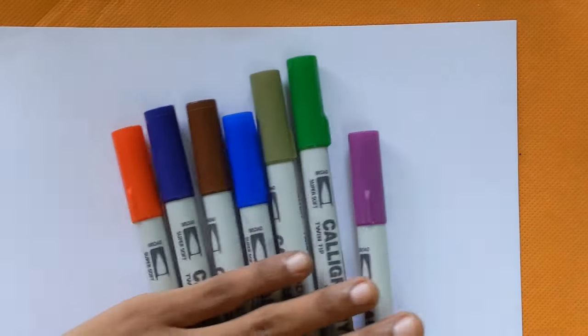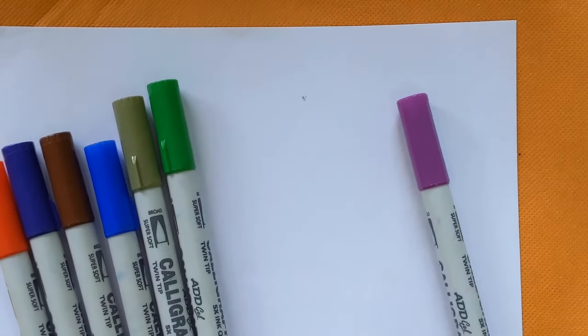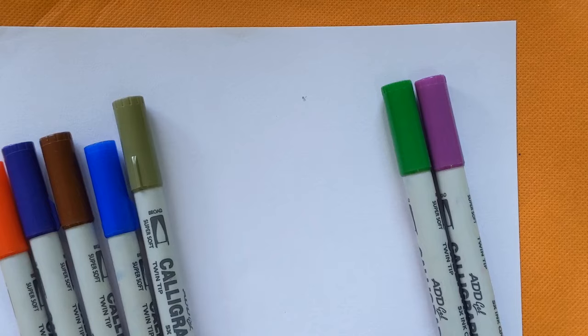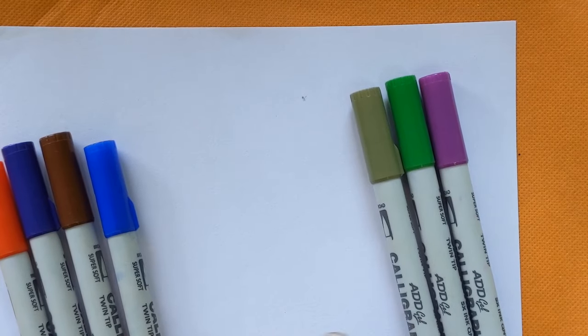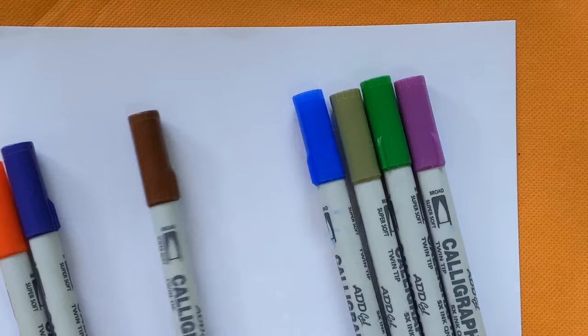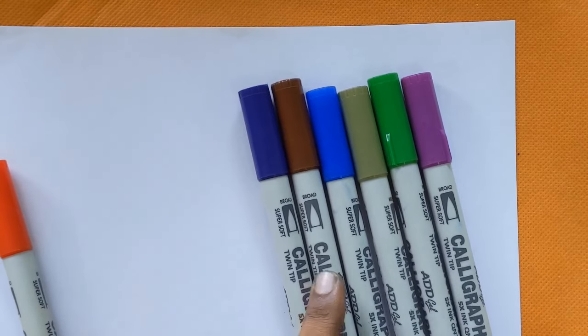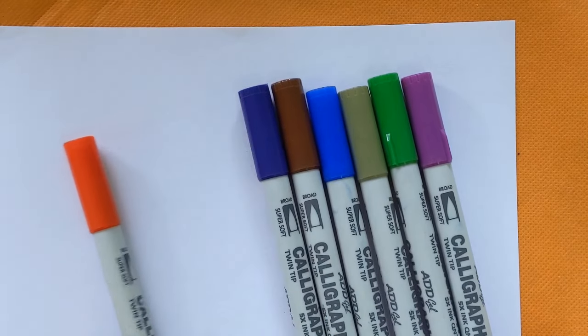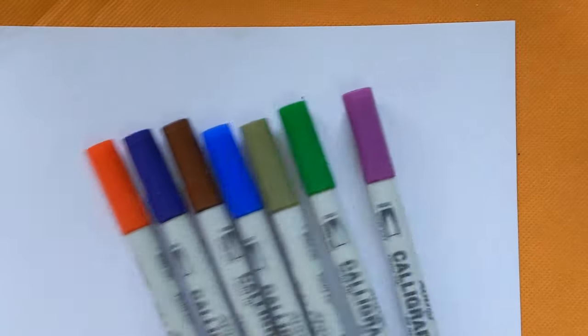Learn some color names. It's a purple color. Light green color. Olive green color. Blue color. Brown color. Violet color. And this one is red color. Let's get started.